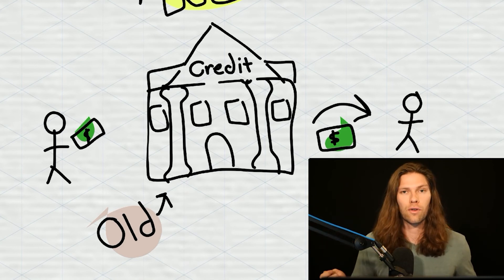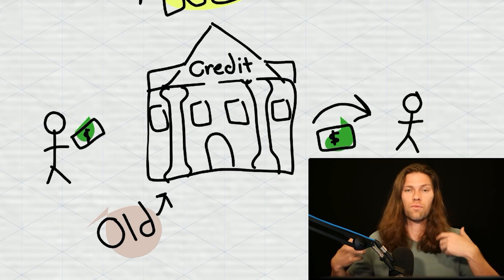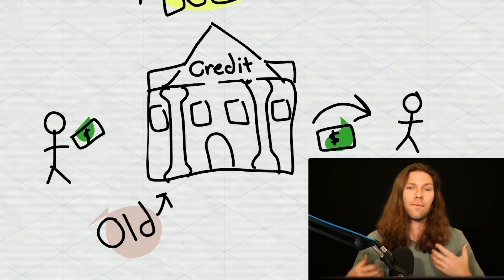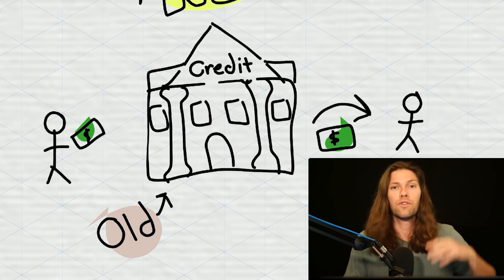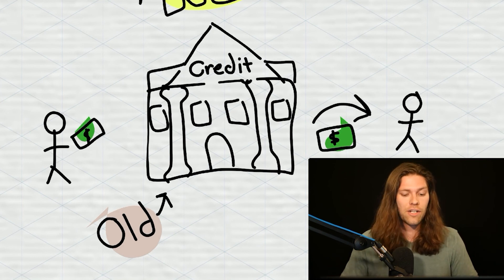That company who accepts the credit card takes the card, slides it, charges whatever the amount is, and then pays something like 3.4% to the credit card company who gets paid this huge chunk to hold the credit risk and facilitate the transaction.